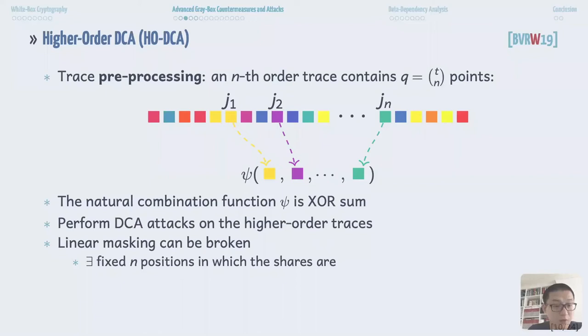The natural combination function to attack linear masking is XOR sum since it simply reveals the sensitive variables. In an obscured white box implementation, we don't know where the n shares are. Hence, the attacking trace window size t could be very large, which makes the high-order DCA be impractical. For example, if the linear masking order n equals 5 and the attacking window size is 1,000, then there would be 1,000 choose 5 shares in the high-order traces, which is about 2^43.